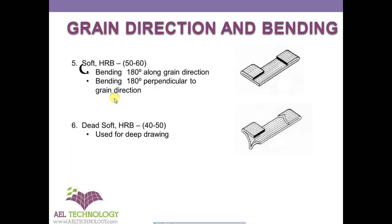Next is soft sheet, whose HRB lies between 50 and 60. We can create hems in both directions of the grain.